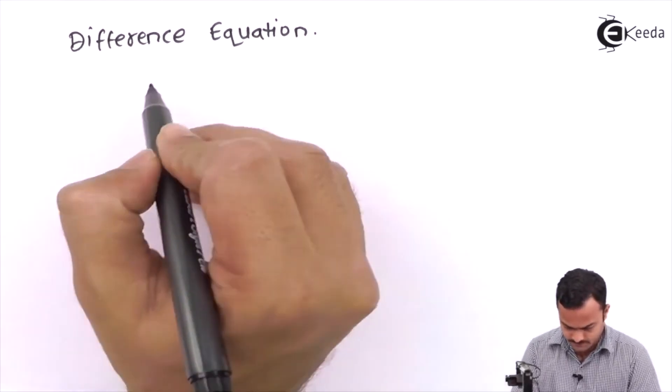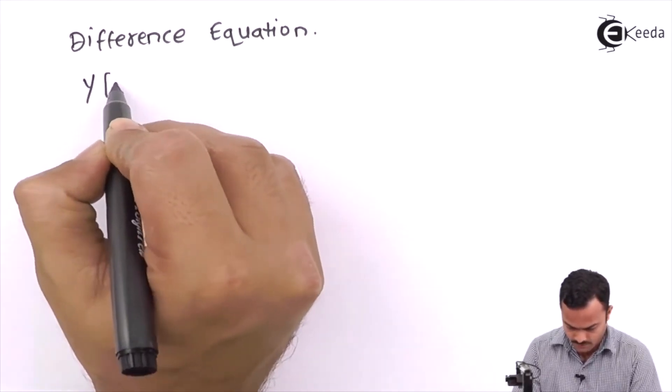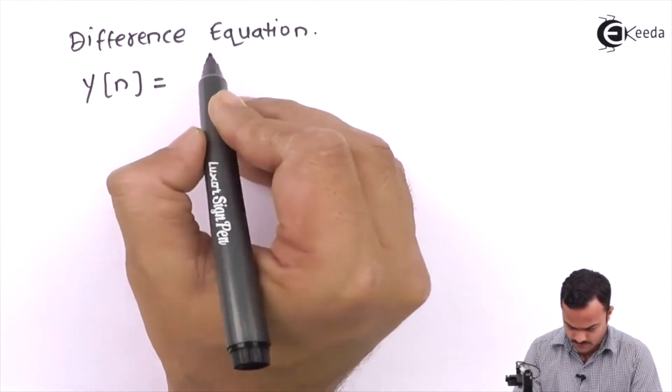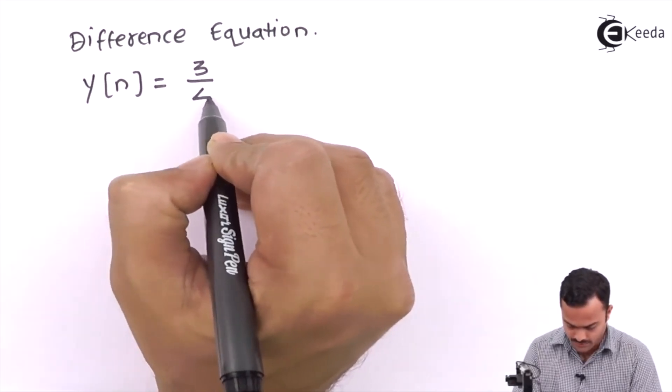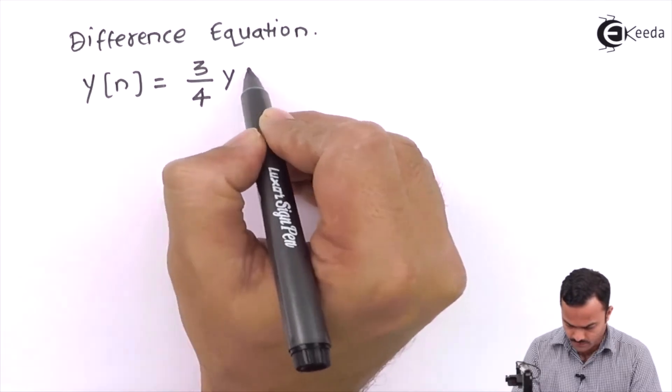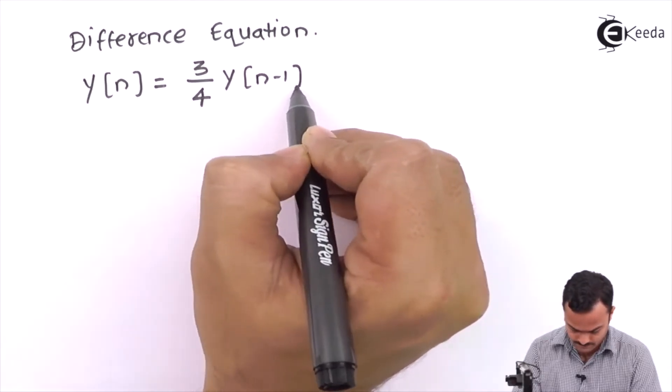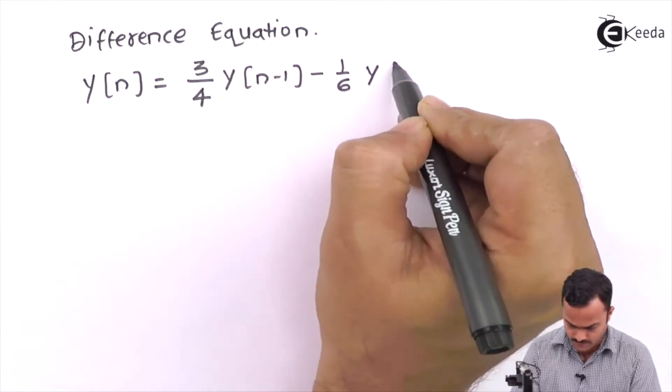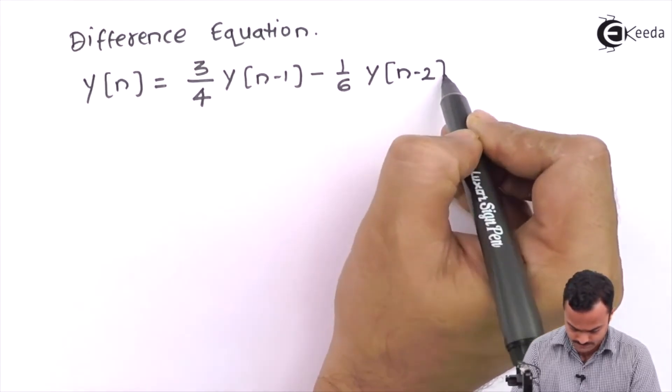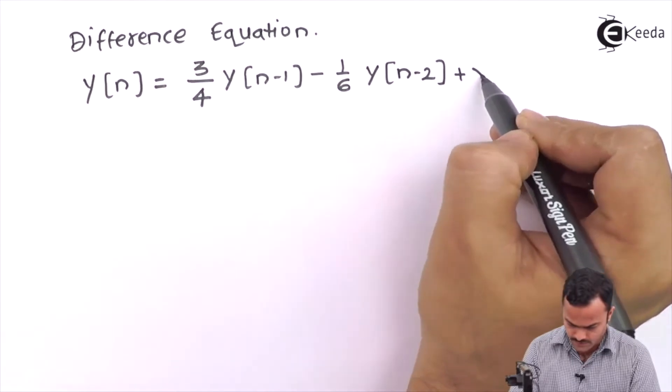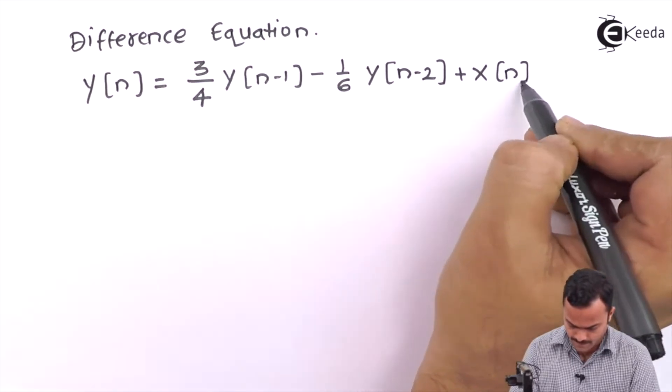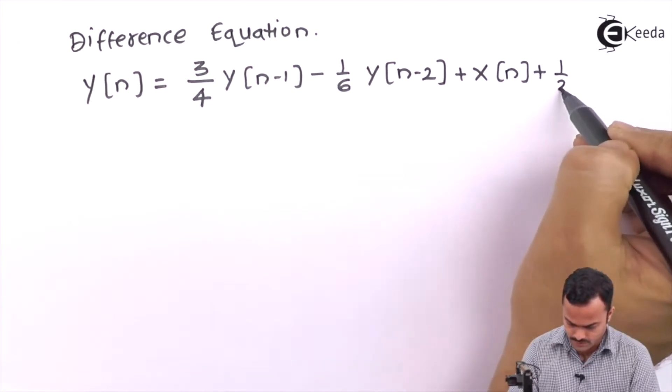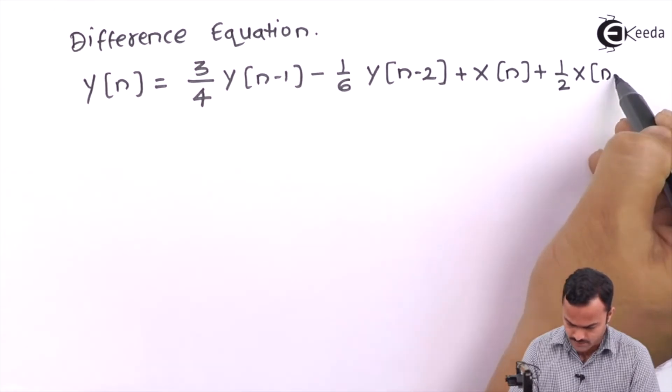The equation is given by y(n) = 3/4 y(n-1) - 1/6 y(n-2) + x(n) + 1/2 x(n-1).